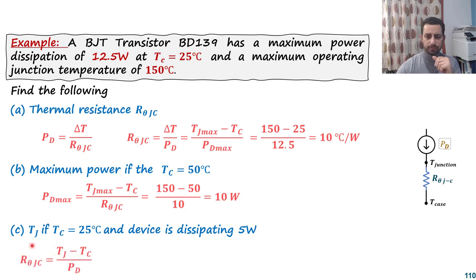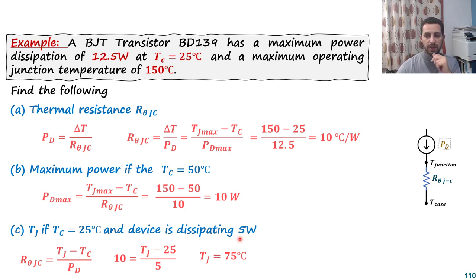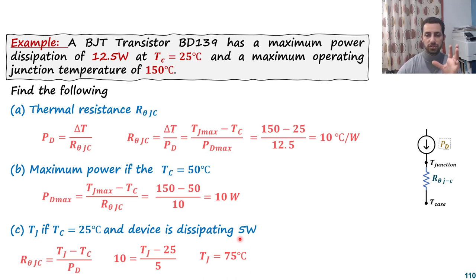Using the thermal Ohm's law — thermal resistance equals temperature difference divided by power dissipation — the junction temperature comes out to 75°C. This gives you a feel for how hot the device gets at partial load. You can consider other scenarios as well. This is the straightforward approach to remember and apply the thermal Ohm's law.